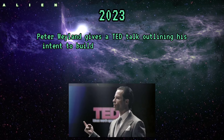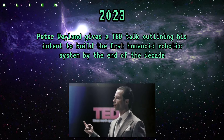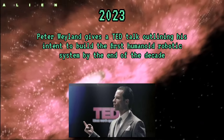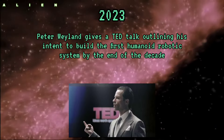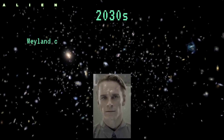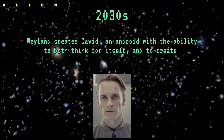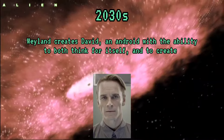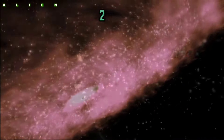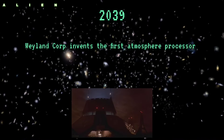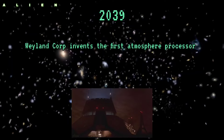2023: Peter Weyland gives a TED Talk outlining his intent to build the first convincingly humanoid robotic system by the end of the decade. 2030: Weyland creates David, an android with the ability to both think for itself and to create. 2039: Weyland Corp invents the first atmosphere processor.